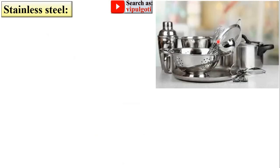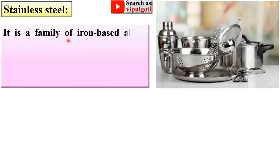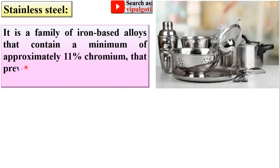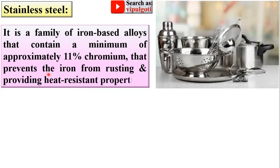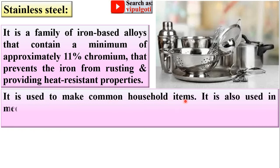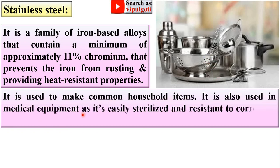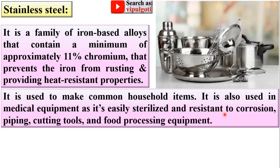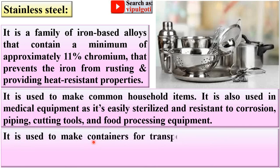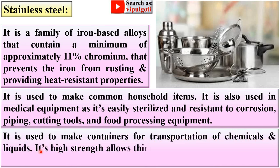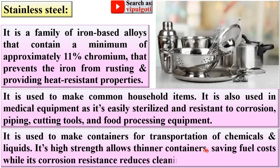Stainless steel is a family of iron-based alloys that contain a minimum of approximately 11 percent chromium, which prevents the iron from rusting, providing corrosion and heat resistant properties. It is used to make common household items, medical equipment — as it is easily sterilized and resistant to corrosion — piping, cutting tools, and food processing equipment. It is also used to make containers for transportation of chemicals and liquids; its high strength allows thinner containers, saving fuel costs, while its corrosion resistance reduces cleaning and maintenance costs.